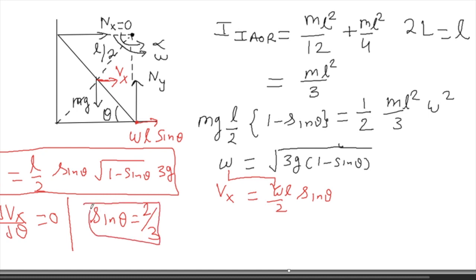If sinθ = 2/3, it means that at the moment when the rod loses contact with the vertical wall, the height of the upper end will be 2L/3, which is what we are supposed to prove in this question. So this is one way of doing this problem.